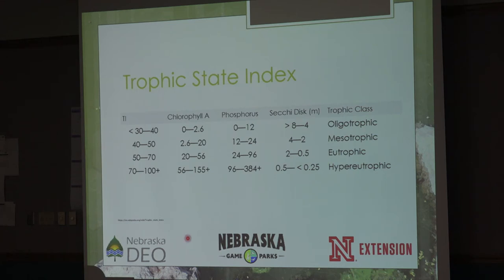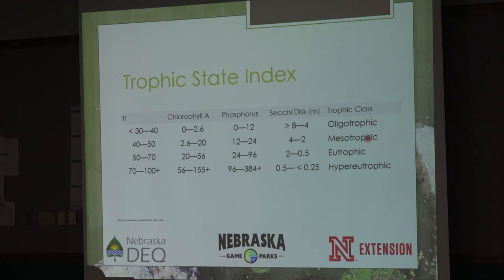The trophic state index is important to know — it's a measure to understand the health of a lake using a few quick parameters: the Secchi disc reading, the phosphorus concentration, and the chlorophyll A concentration. You can combine those three numbers to give you a range that tells you how your lake is doing. Oligotrophic means probably not enough nutrients for a super productive lake — not necessarily a bad thing. Mesotrophic is the middle ground. Eutrophic means you're starting to run into problems — too many nutrients, too green. Hyper-eutrophic is where Nebraska finds a lot of its lakes and reservoirs.